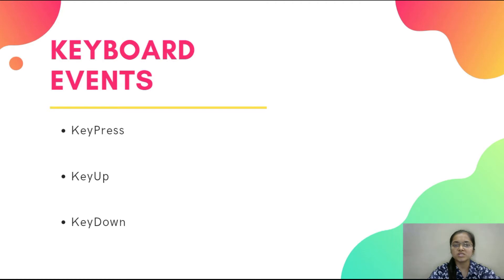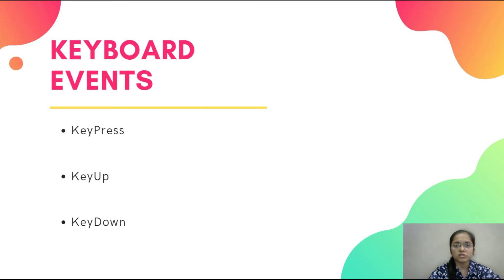The first one is keyboard event. Keyboard event means while doing anything you perform some task using the keyboard — at that time a keyboard event is performed. Like keypress or keydown. Both are similar. The main difference between them we will see in our coding section. Keypress and keydown mean when you type a letter into a text box or press a key.